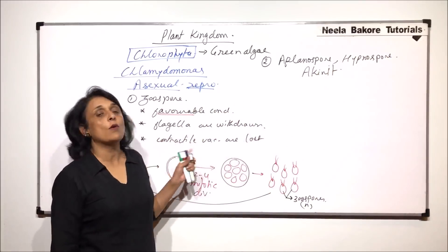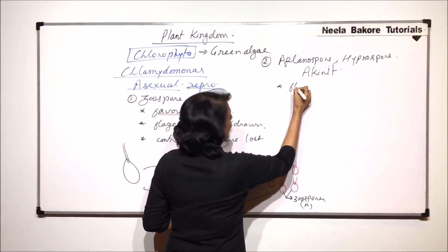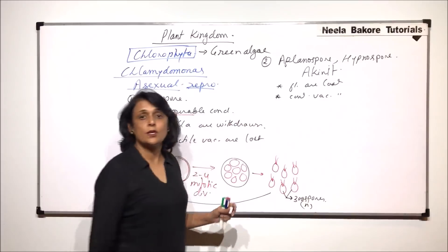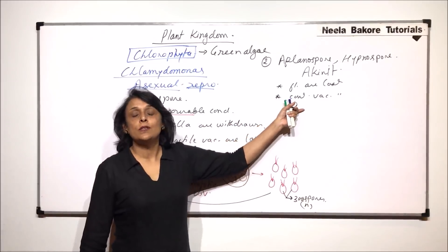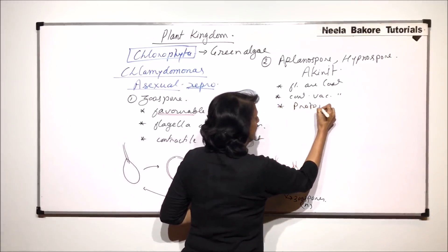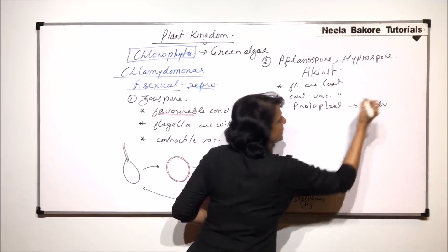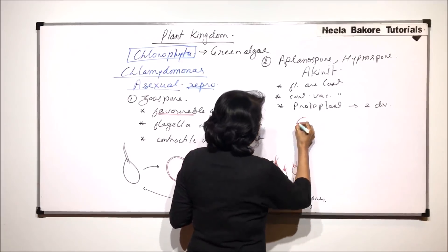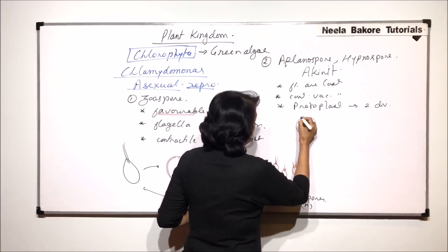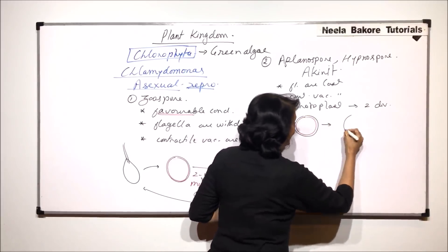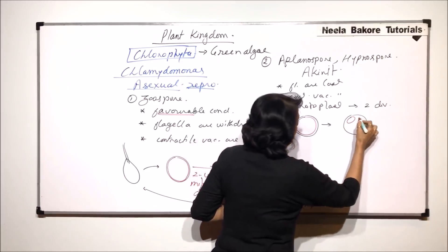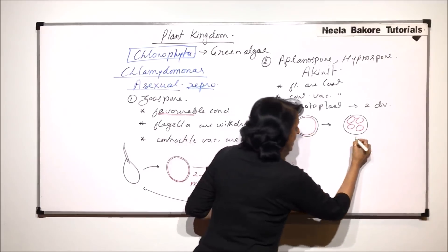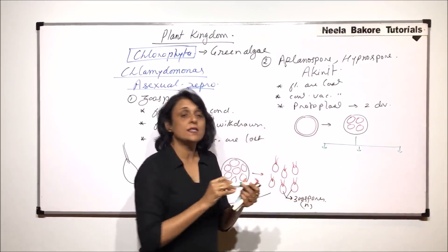In unfavorable conditions, the same initial process occurs: first flagella are lost, then contractile vacuoles are lost. After losing the flagella, the protoplast undergoes normally two divisions, but this number is variable, so there can be four cells formed. What we see is that inside the cell wall there would be four spore-like structures, and now a wall is deposited. What kind of wall is deposited gives us three types of these spores.